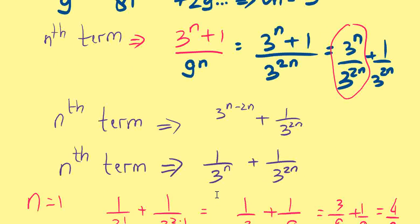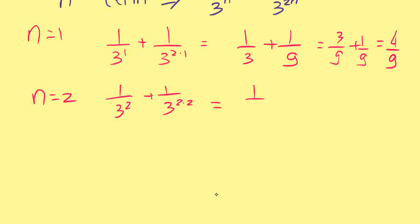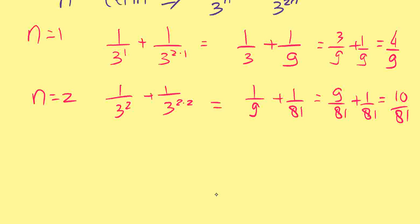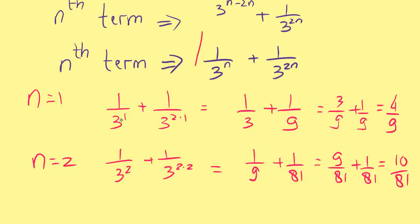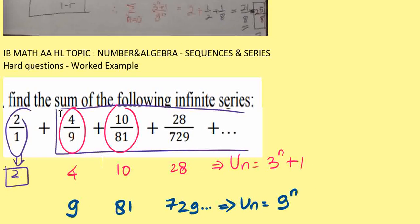Now let's check the second term, which should be 10 over 81. For n equals 2: 1 over 3 squared plus 1 over 3^4 equals 1 over 9 plus 1 over 81, which becomes 9 over 81 plus 1 over 81, giving us 10 over 81. This is correct, confirming our n-th term formula.